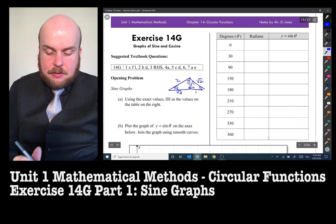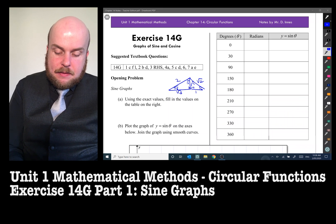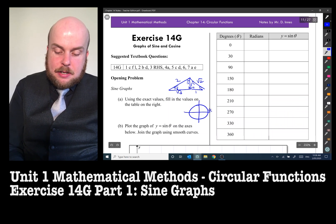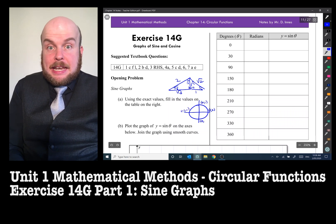And similarly, if I go and take my unit circle, that is 1, 0, 0, 1, negative 1, 0, and 0, negative 1.